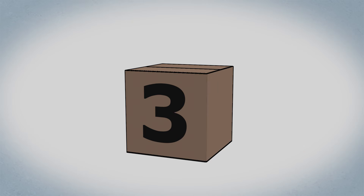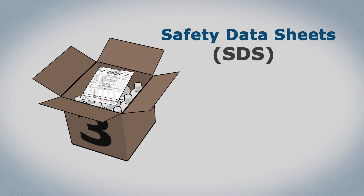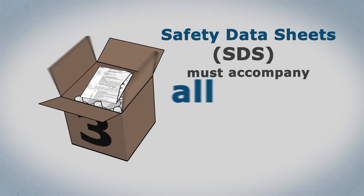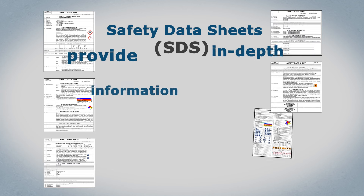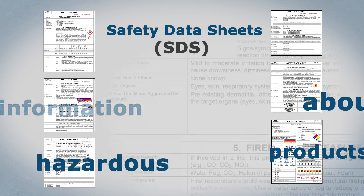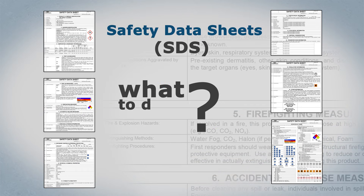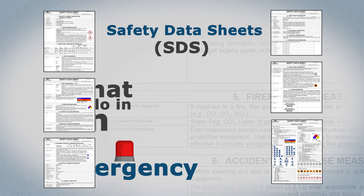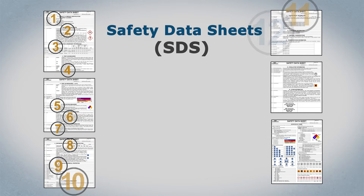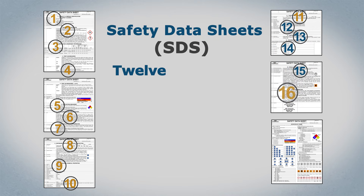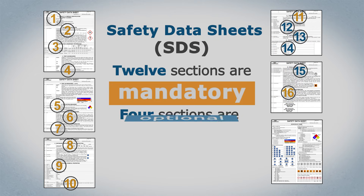Number three: safety data sheets, or SDS, must accompany all hazardous products. They provide in-depth information about hazardous products and give advice about safety precautions and what to do in an emergency. WHMIS 2015 requires a 16-section data sheet — twelve of these sections are mandatory and four are optional.